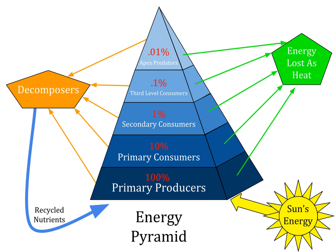A Pyramid of Productivity is often more useful, showing the production or turnover — the rate at which energy or mass is transferred from one trophic level to the next — of biomass at each trophic level. Instead of showing a single snapshot in time, productivity pyramids show the flow of energy through the food chain. Typical units are grams per meter squared per year or calories per meter squared per year. This graph shows producers at the bottom and higher trophic levels on top. When an ecosystem is healthy, this graph produces a standard ecological pyramid.